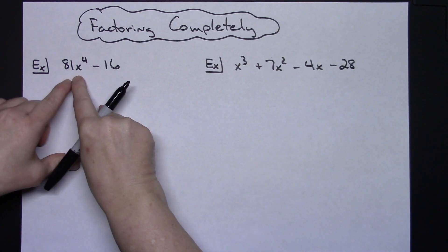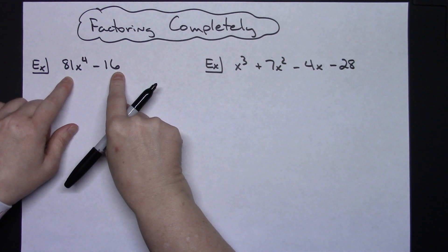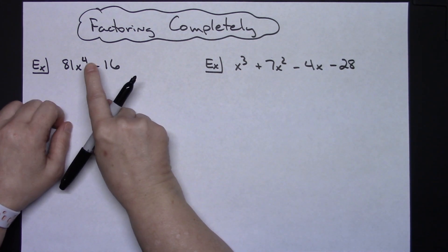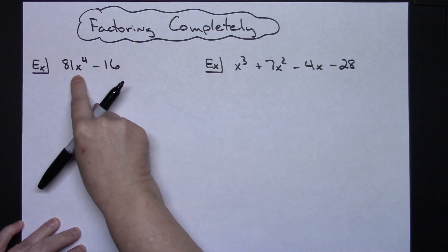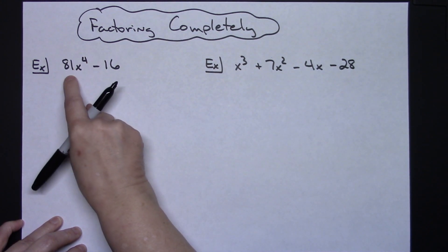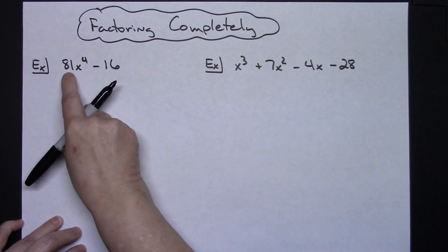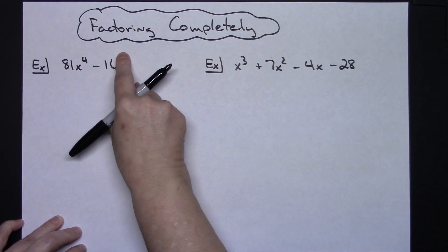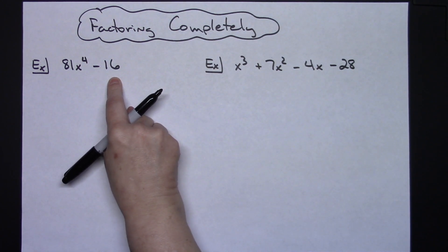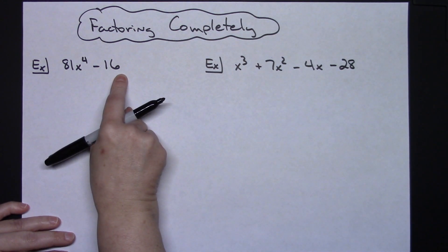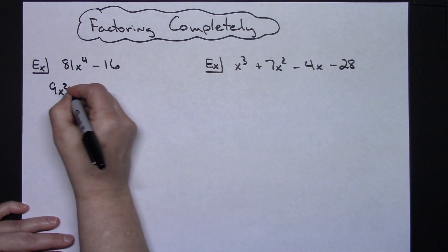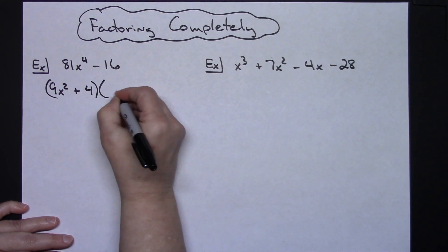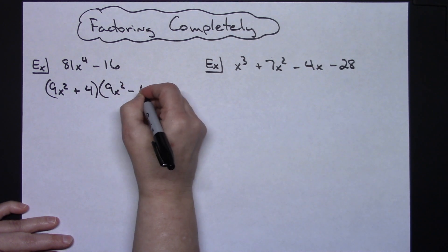So this first example: I've got 81x⁴ minus 16. I've got two terms and a minus sign, so that should be a trigger to check for the difference of two squares. The square root of 81x⁴ is 9x², and the square root of 16 is 4. So this is the difference of two squares, giving us (9x² + 4)(9x² - 4).